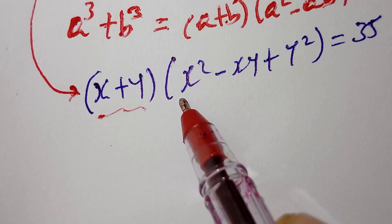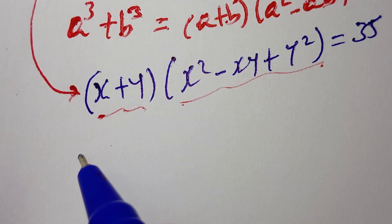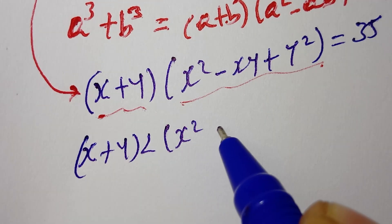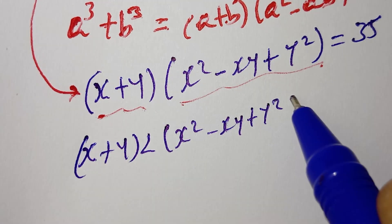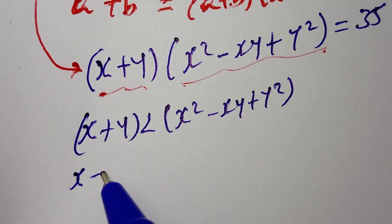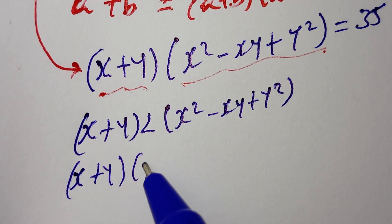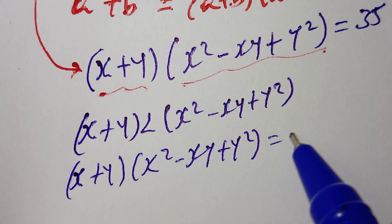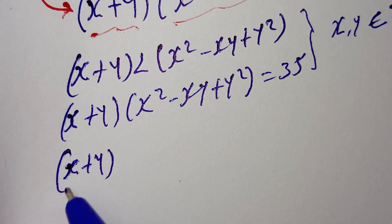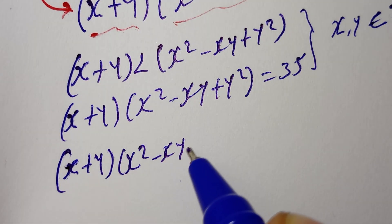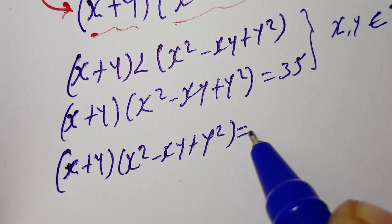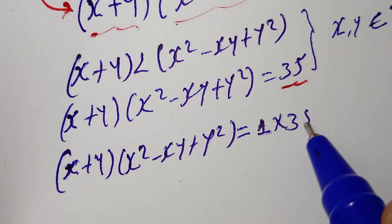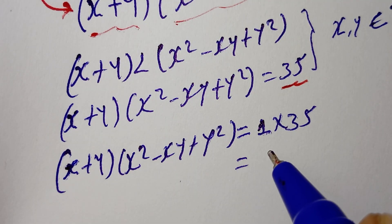Now, x is always less than y. So x plus y is less than x squared minus xy plus y squared. We have x plus y times x squared minus xy plus y squared equal to 35. Now, 35 is the same as 1 times 35, and the same as 5 times 7.